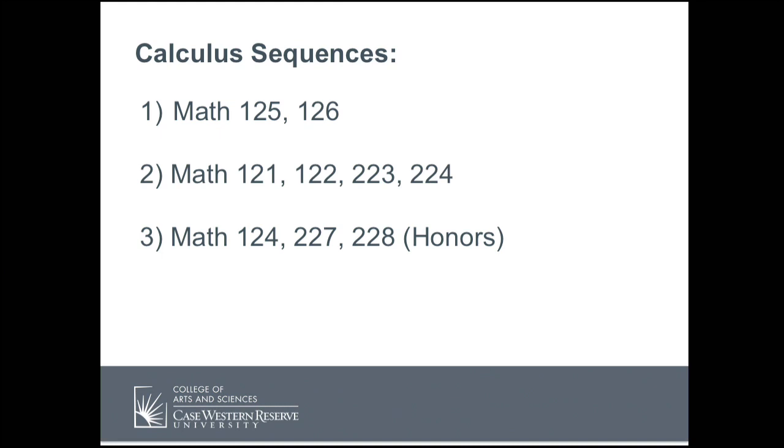A lot of students have asked about different calculus sequences. We actually have three in the math department: the Math 125–126 sequence, the Math 121–122–223–224 sequence, and our Math 124–227–228 honors sequence. How do you choose between them? First, look at what your major requires. If your major requires Math 121, that's the sequence for you. If not, you should think about taking Math 125–126. If you have one major that requires 121 and another that requires 125, I would suggest you take Math 121, because for all majors that require 125, Math 121 works also.